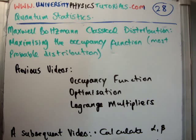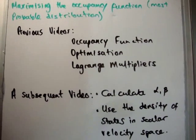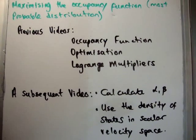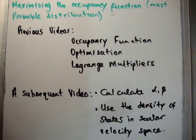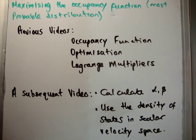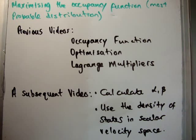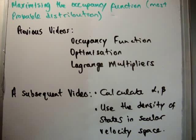After this I'll also be doing calculating alpha and beta, which will be our Lagrange multipliers, and I will be using the density of states in scalar velocity space in order to calculate the Maxwell-Boltzmann velocity distribution formula, which you're all, I'm sure, used to seeing.